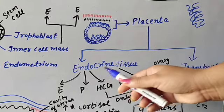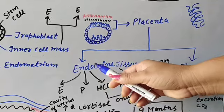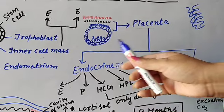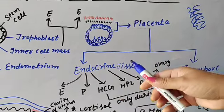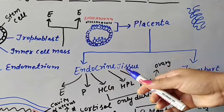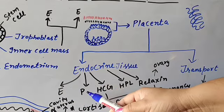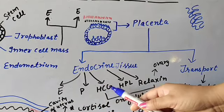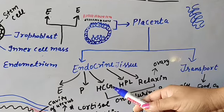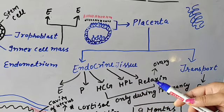The placenta is also known as endocrine tissue because it secretes hormones. The hormones secreted by the placenta are estrogen, progesterone, HCG (human chorionic gonadotrophic hormone), HPL (human placental lactogen hormone), and relaxin.